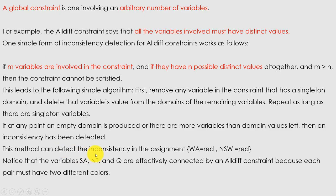This method can detect the inconsistency of the assignment WA = red and NSW = red. The variables SA, NT, and Q are effectively connected by all-different constraints because each pair must have two different colors. This was applied to the map coloring problem — for every concept we have been taking the map coloring problem as our running example to find solutions.